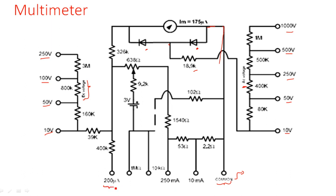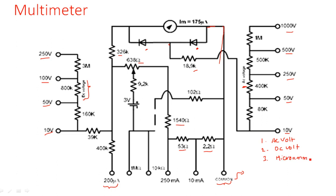So we have seen the AC voltage section and the DC voltage section. Another section is the micro ampere range — 200 micro amperes. If you take this 200 micro ampere path along with the common section, the common section consists of 326 kilo-ohms, 638 kilo-ohms, 1540 ohms, 53 ohms, and 2.2 ohms — and then the common point. This forms the micro ammeter section.